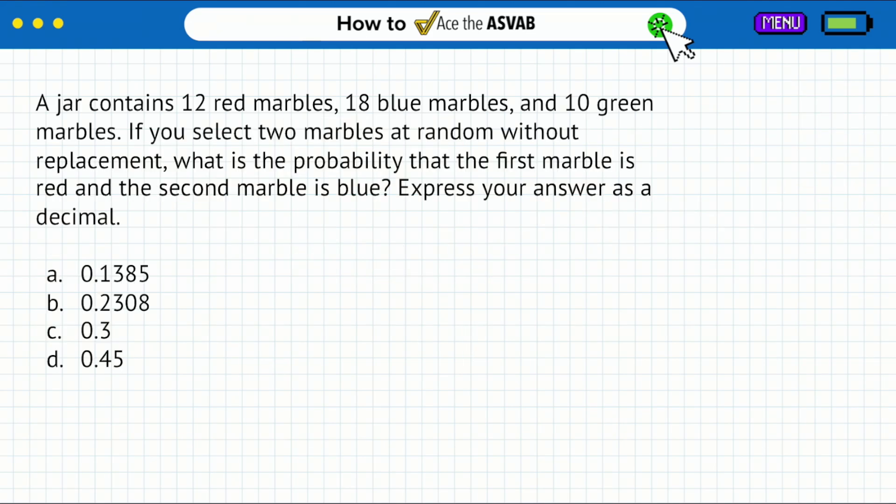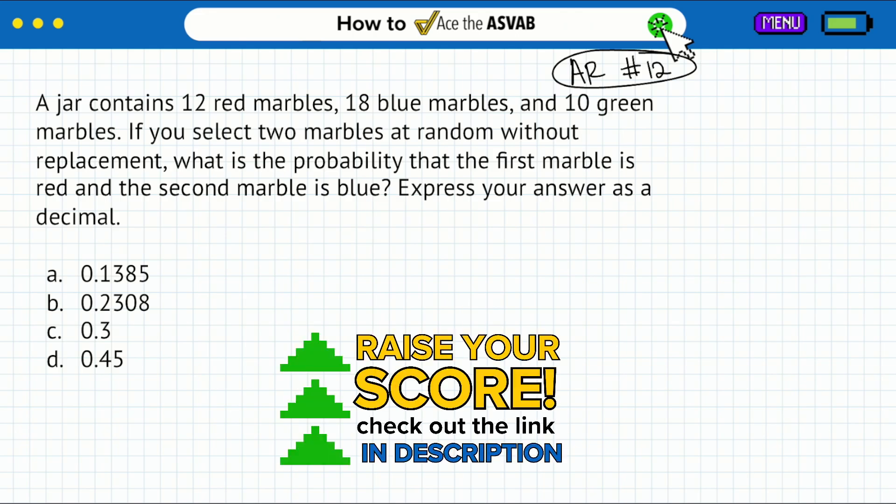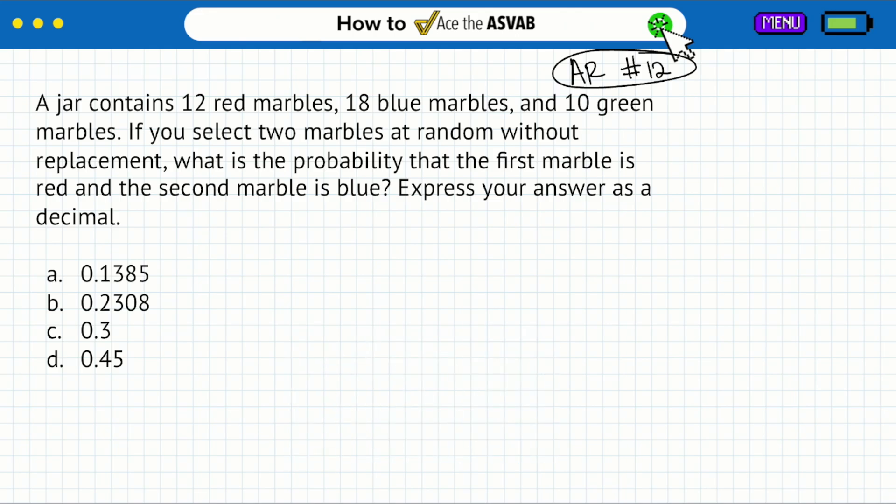Before I get into this one, if you are in the program, this is going to be in your arithmetic reasoning course, unit number 12. You're going to have probability and statistics in there. Lessons, worksheets, recordings, practice, and step-by-step solutions all there waiting for you. For those of you who are not in the program, you should definitely take advantage of our holiday sale going on right now. Our Memorial Day sale is live. Text our team or check out the link in the description.